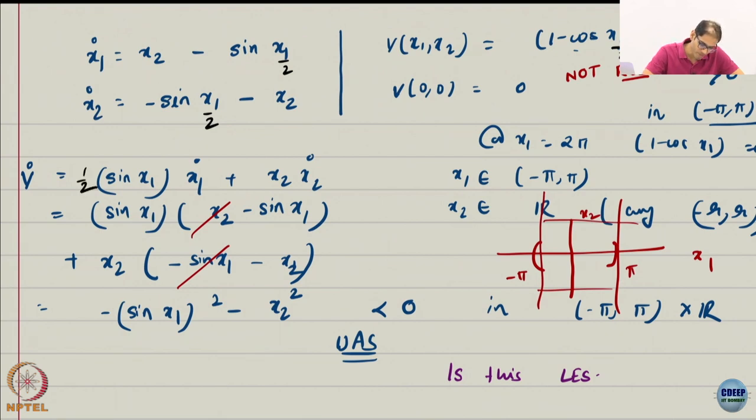This will become sin x1 by 2 times half. There will be a half here. And x2, x2 dot will be half here, half here, half here. And a half here. This will also have a half. Now what happens? Analysis will not go through because of this time.